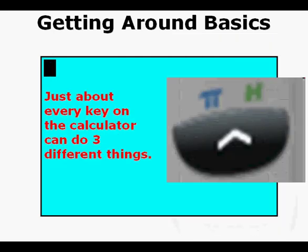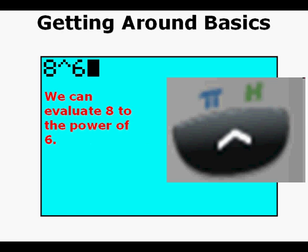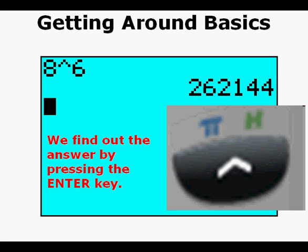Just about every key on the calculator will do three things. This is the exponent key, just below the clear key on the right side of the keypad. We can evaluate 8 to the power of 6 by pressing the 8 key, then the exponent key, then the 6 key. We find the answer by pressing the enter key.